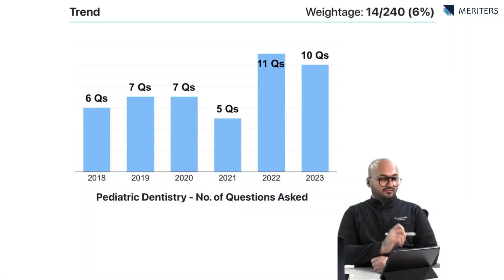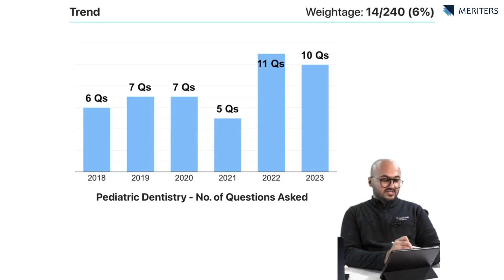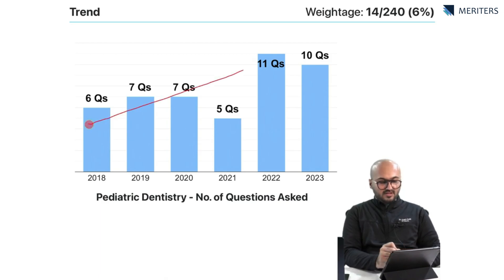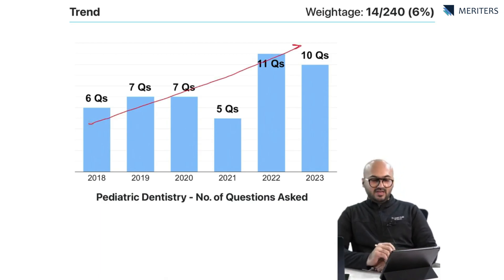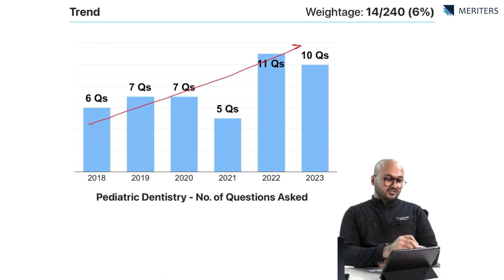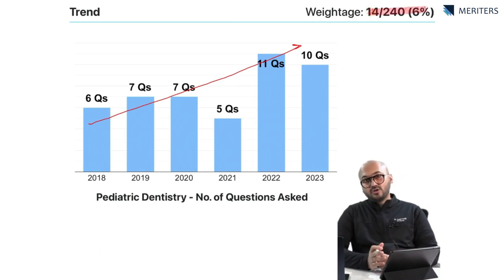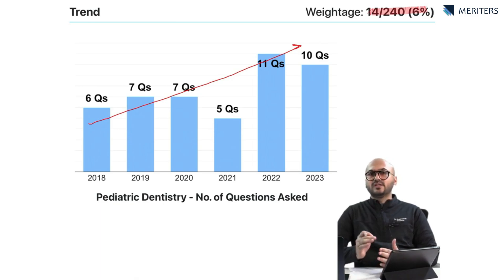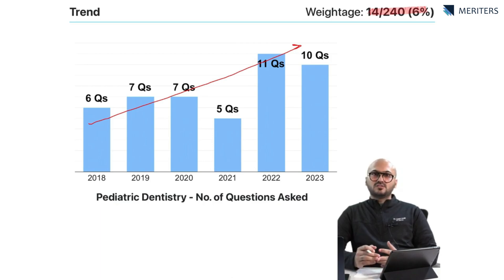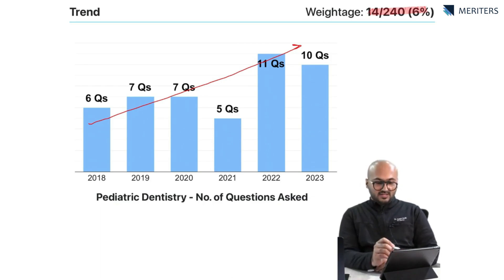If you look at the trend of pediatric dentistry questions in the past six years, you will see that the trend shows an increase in the number of questions from nearly six to up to ten. The proposed weightage of this subject is 14 out of 240 questions, so this is an important subject and relatively easier because there are a lot of parallel topics that come with dental anatomy, some part of endo, and a lot of orthodontics. It's easier to master this subject provided you are focusing on the right kind of tasks.